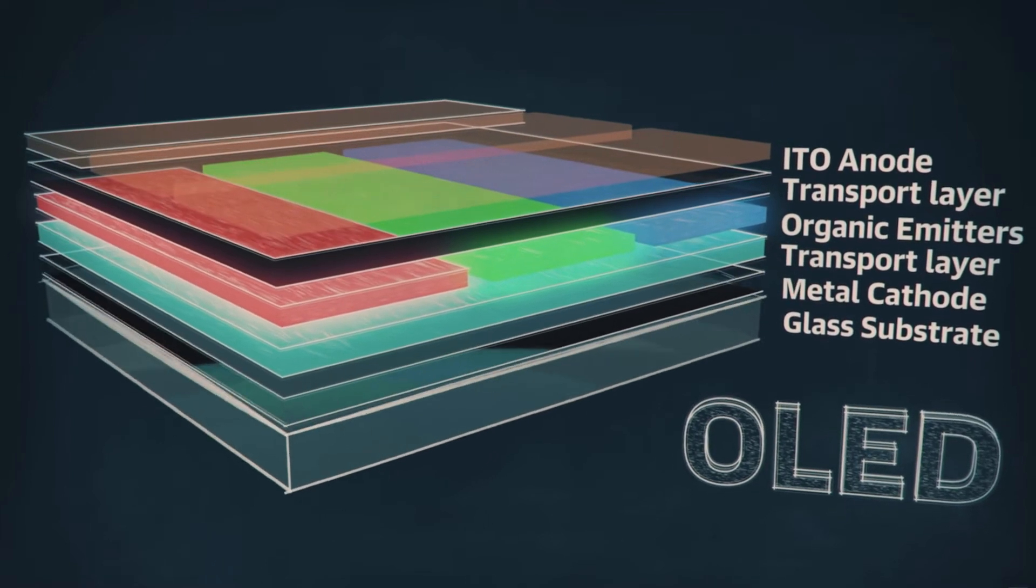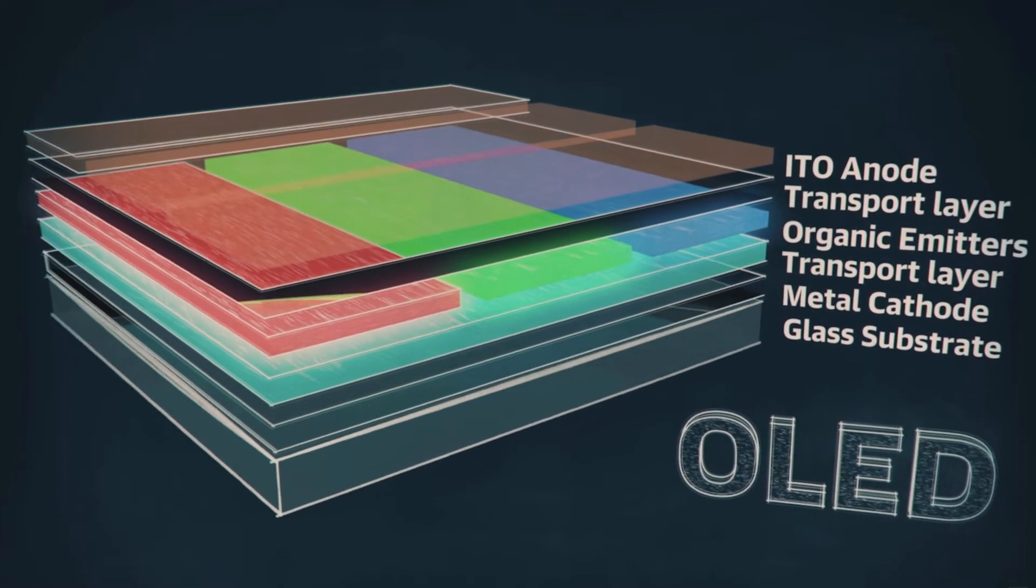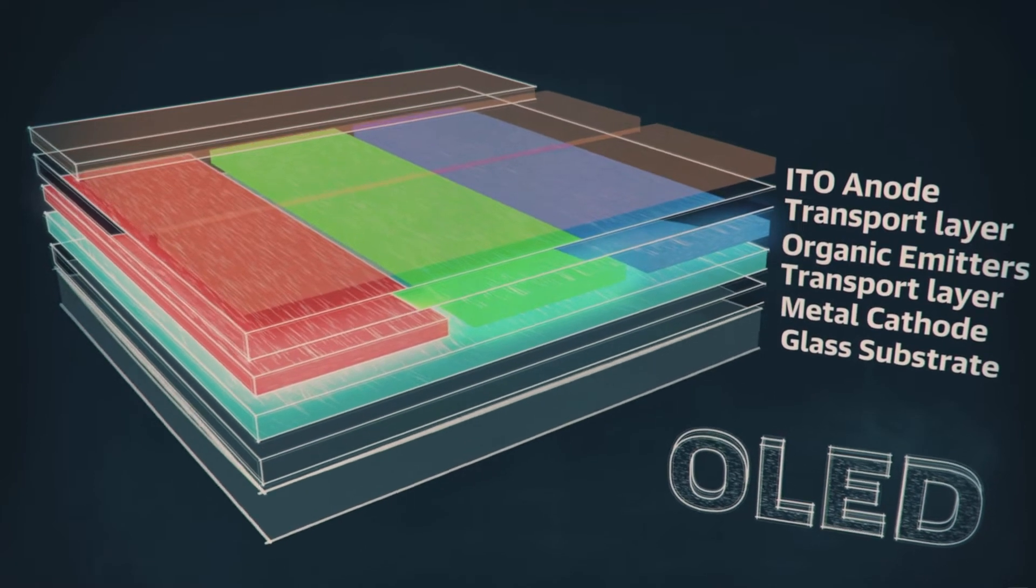When you touch an OLED screen, you're actually touching the display itself rather than a layer of glass in front of it. This means that OLEDs have the advantage of being thinner and more flexible than LCDs because they have fewer components. Essentially, they don't need a backlight.